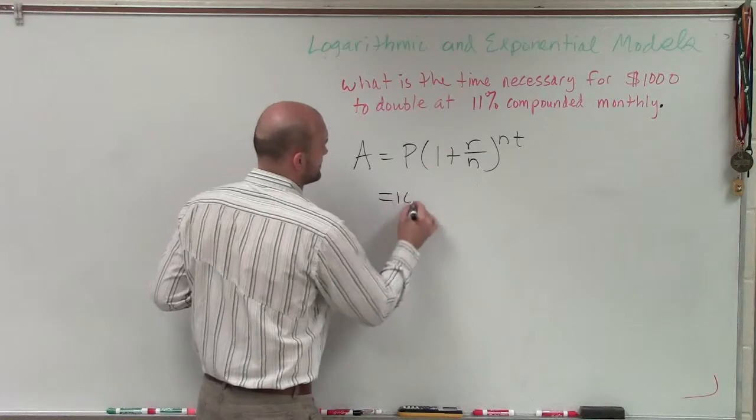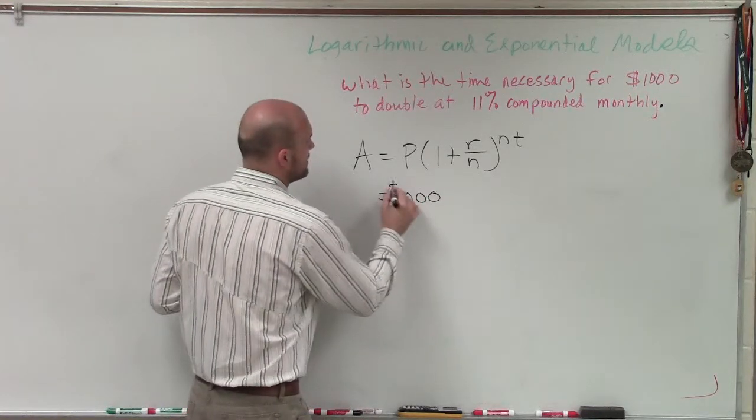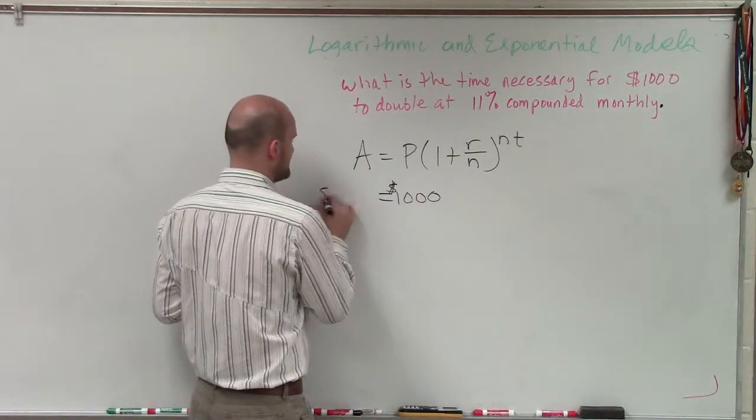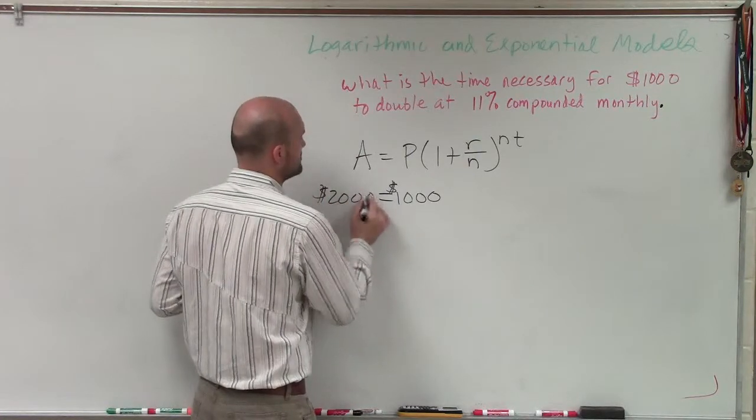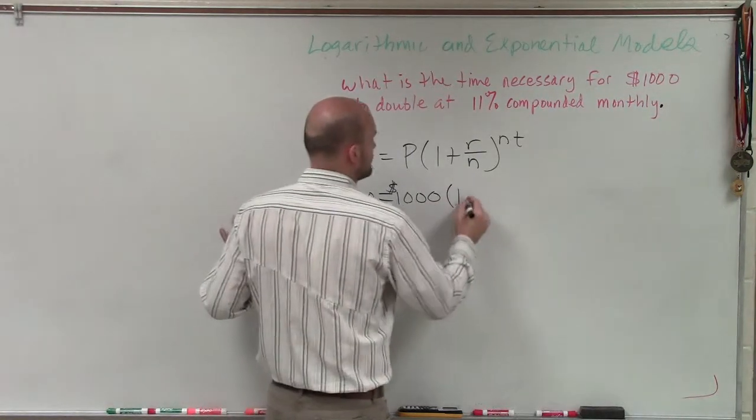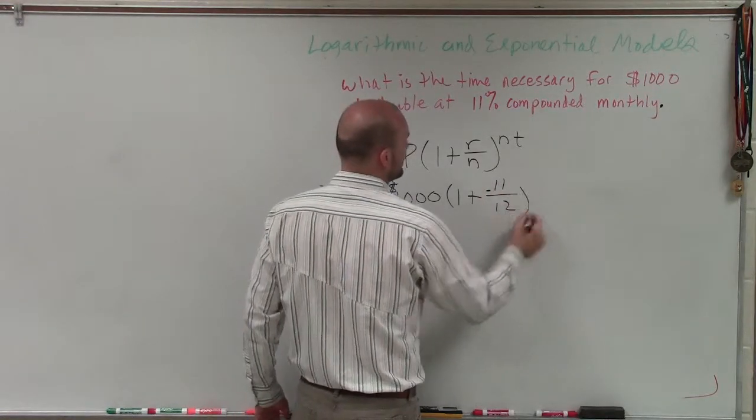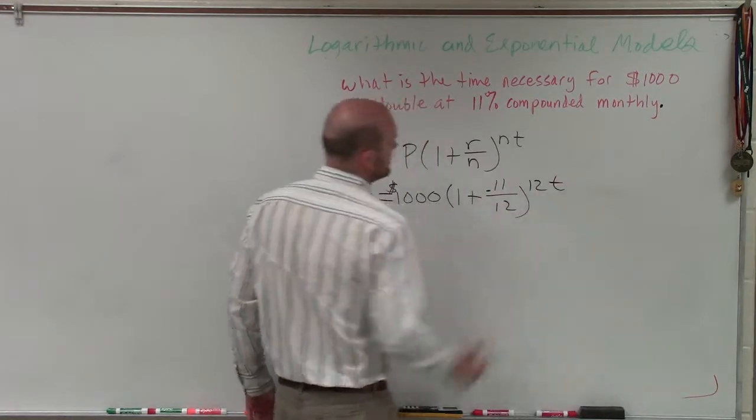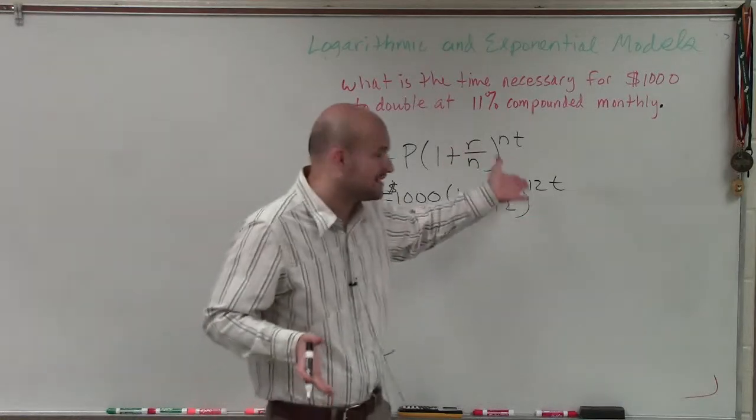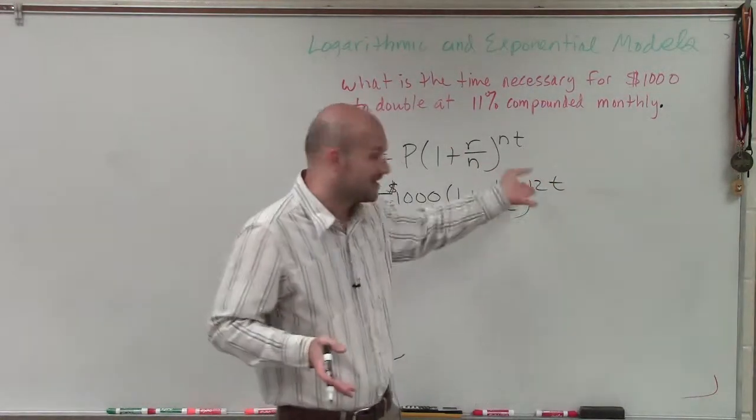So if we have $1,000 and we want that amount to double, therefore, that means we want $2,000 to be our final amount. We know our interest rate is going to be 0.11 divided by 12 raised to the 12 times t. Now what we want to figure out is exactly what is going to be t.